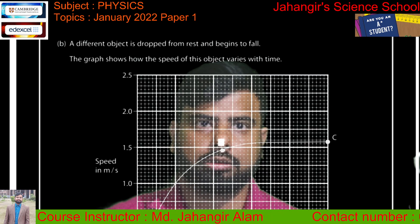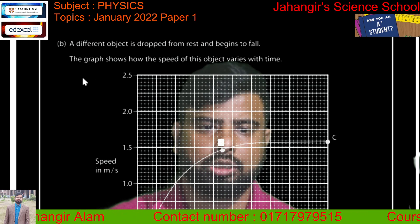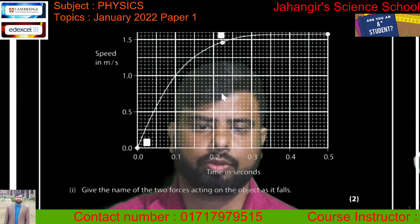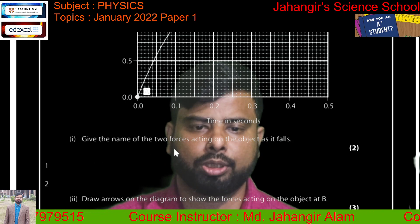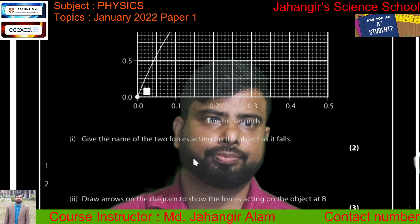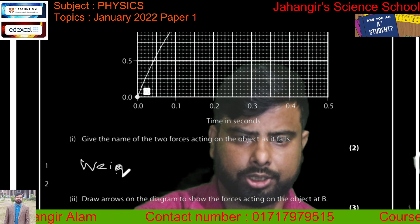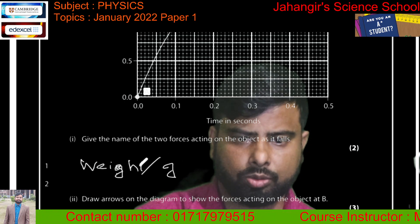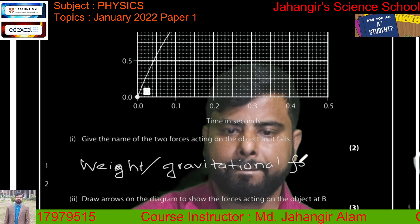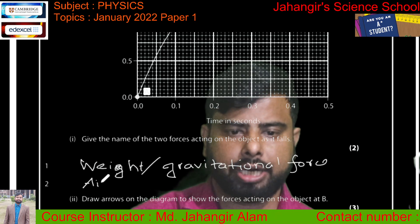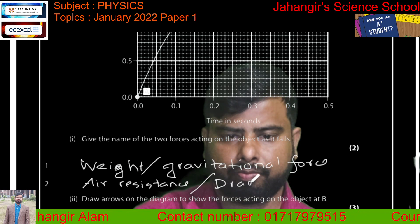Now part b: a different object is dropped from rest and begins to fall. The graph shows how the speed of the object varies with time. Give the name of the two forces acting on the object as it falls. Force one is weight force, also known as gravitational force. The second force is air resistance, also known as drag force.